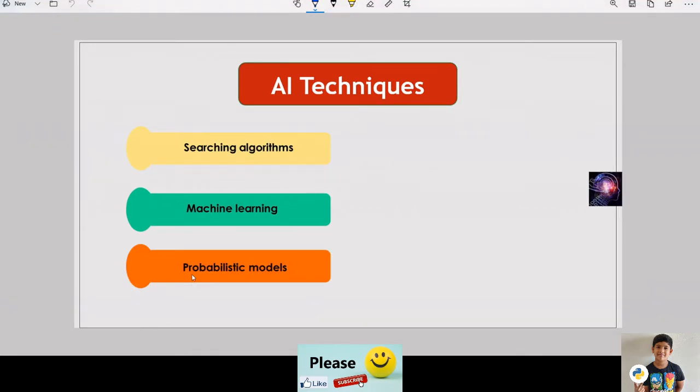Next one is probabilistic models. Probabilistic models are part of symbolic AI. Symbolic AI programs are based on creating explicit structures and behavior rules. If we use mathematics of probability theory to express all forms of uncertainty and noise associated with our model, then the inverse probability allows us to infer unknown quantities, adapt our models, make predictions and learn from the data.